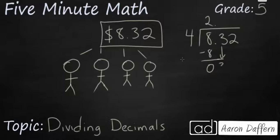You're going to bring down the 3. 4 goes into 3 zero times. So, 0 times 4 is 0, and then we're going to bring down the 2 and finish this up. 4 goes into 32 eight times.